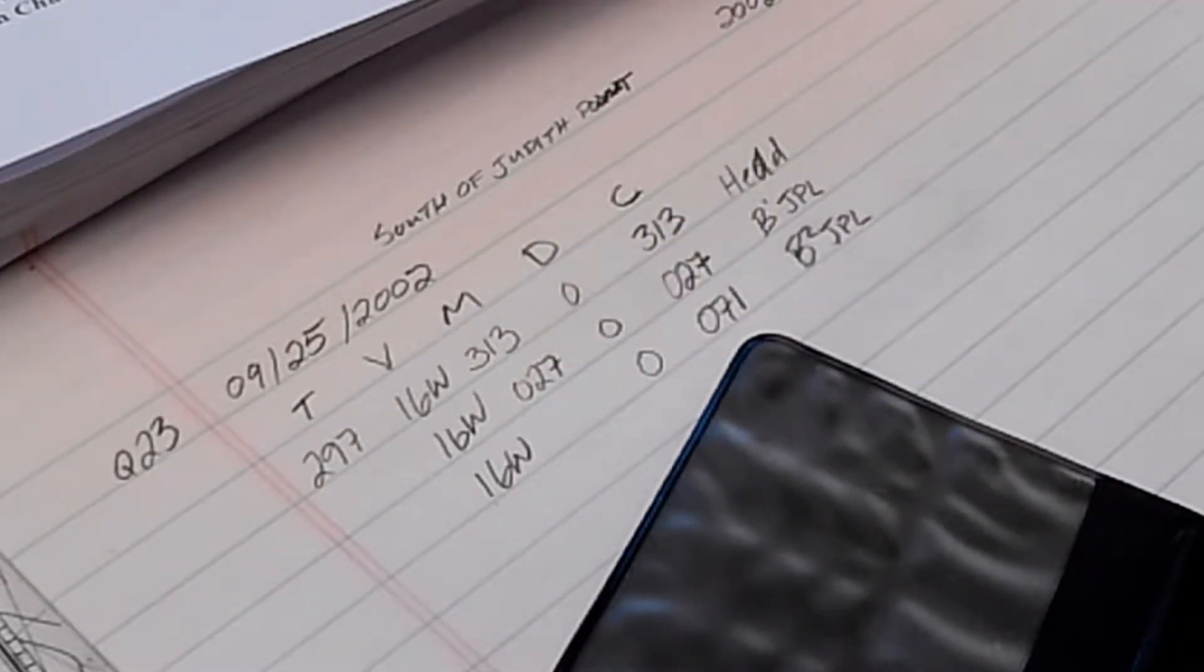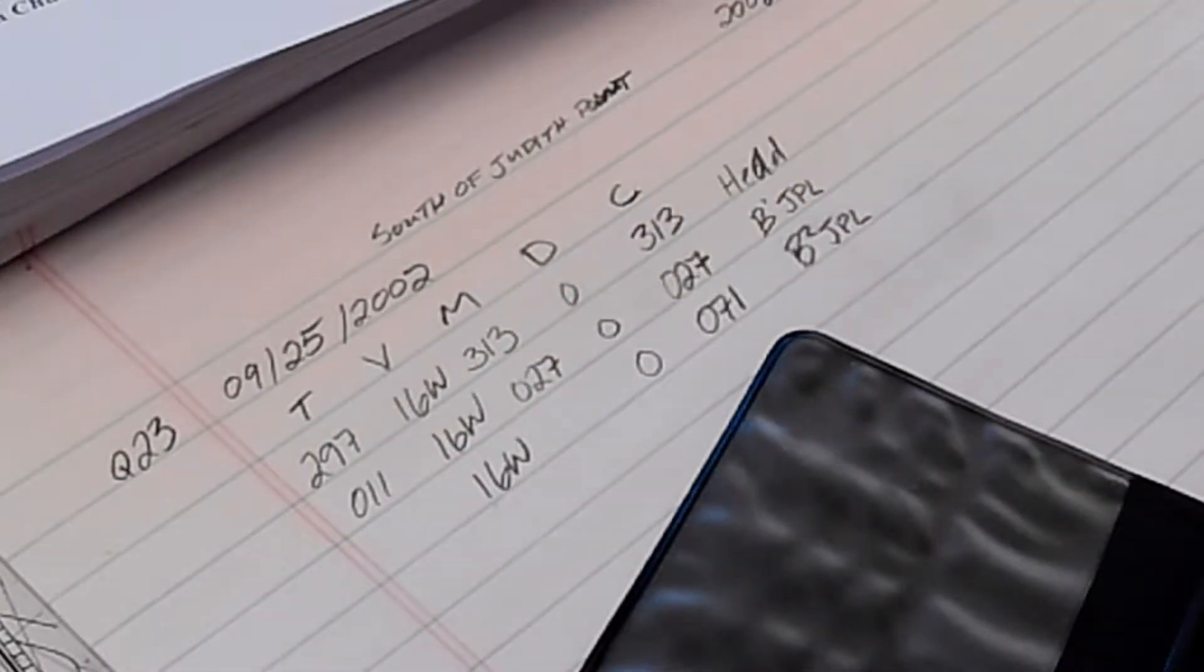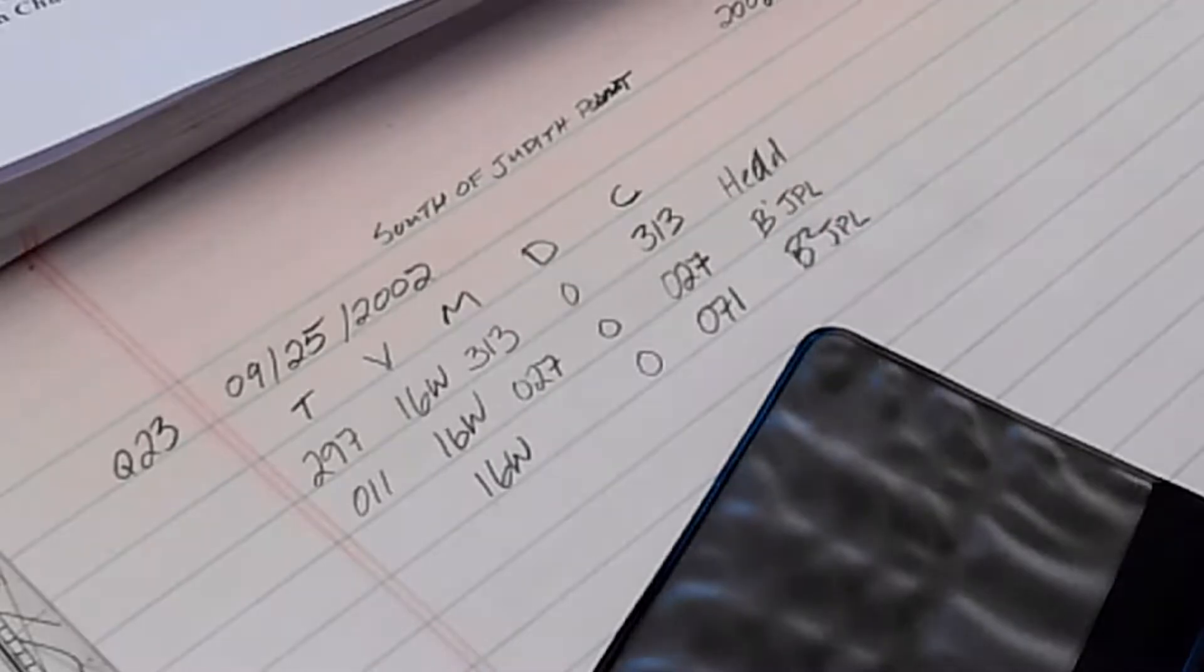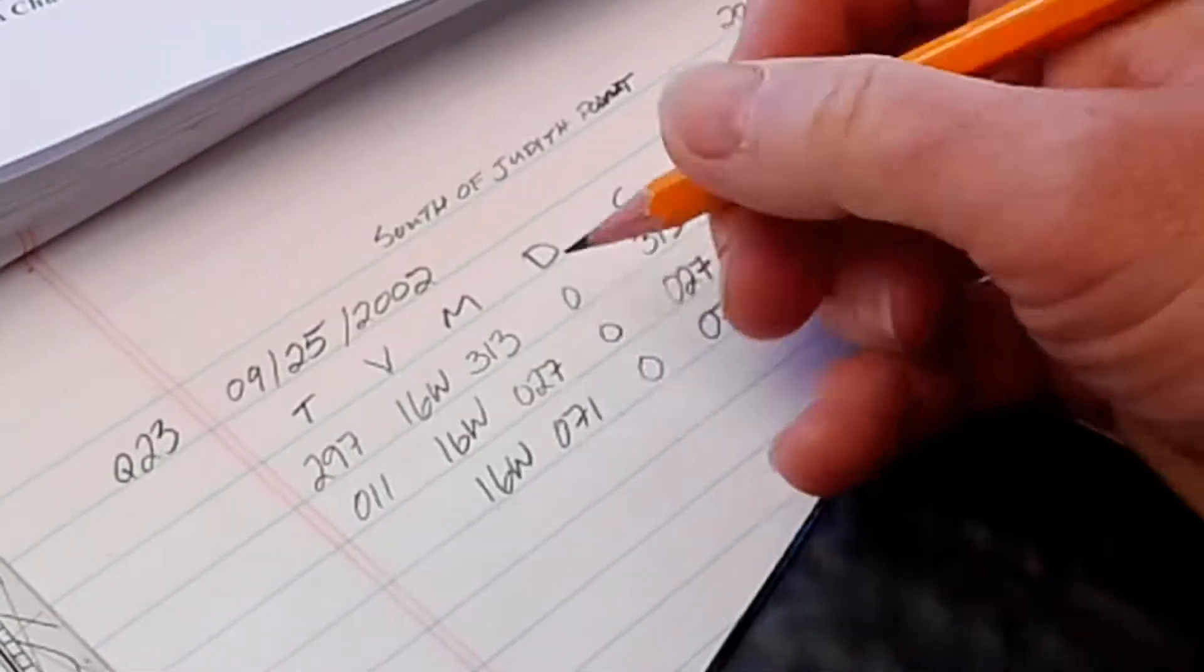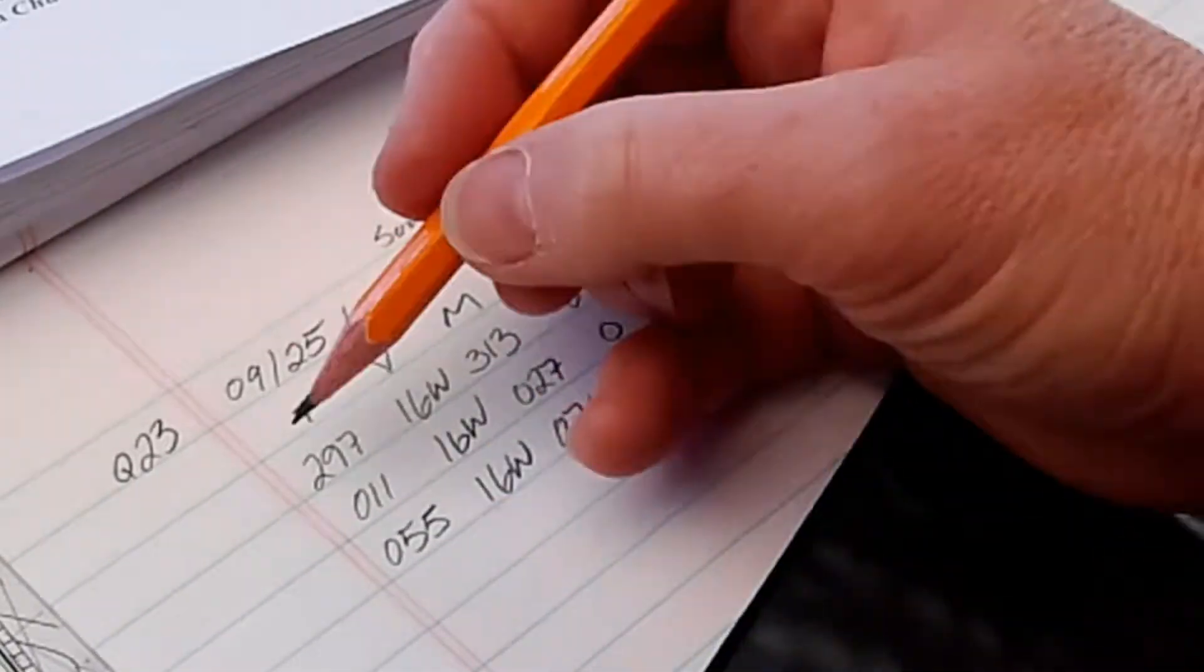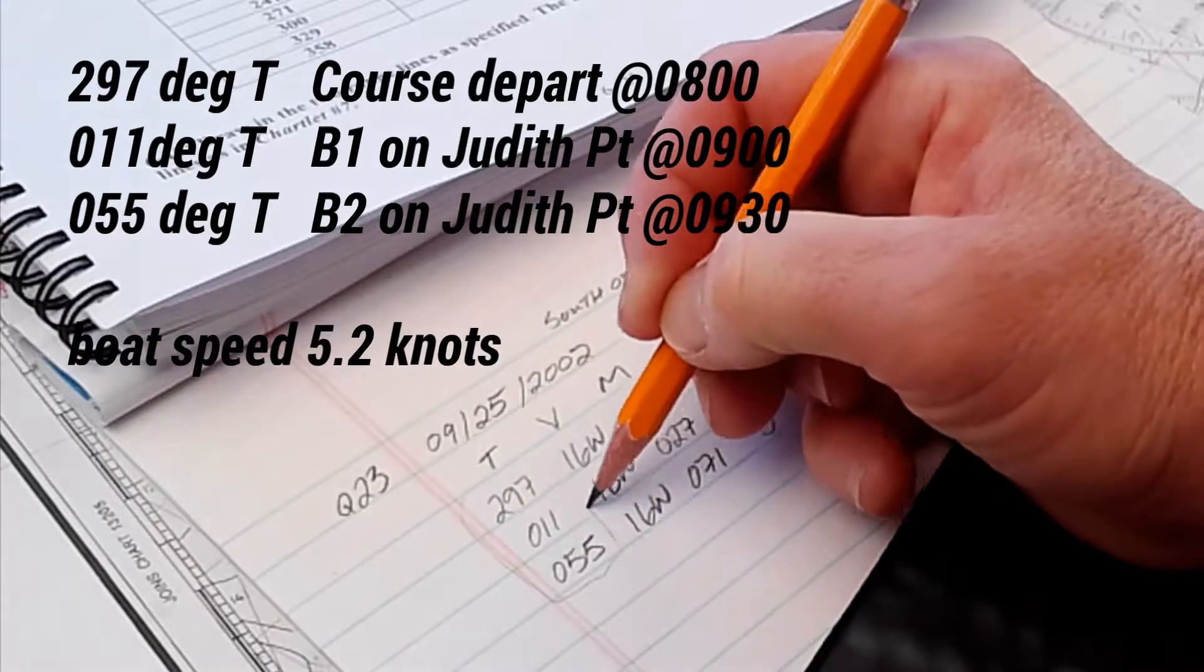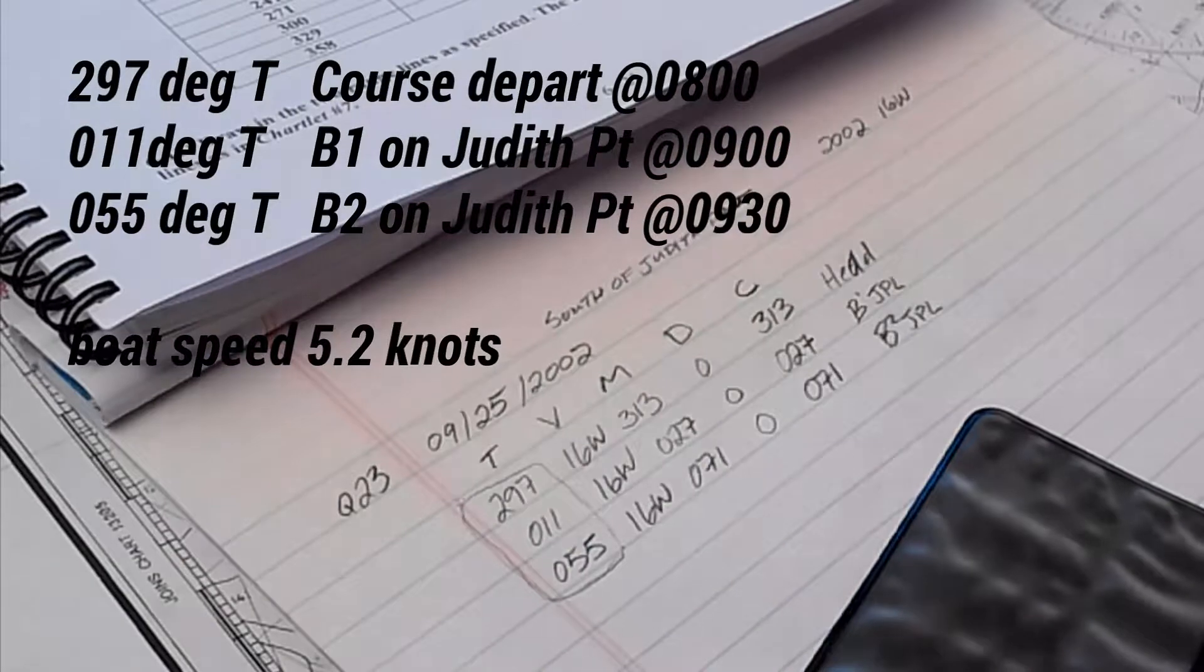It's the same deviation as your course heading. So 027 minus 16 equals 011, and the next one is 071 minus 16 equals 055. These are the ones you're going to plot on the chart.